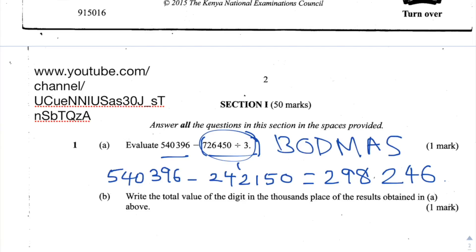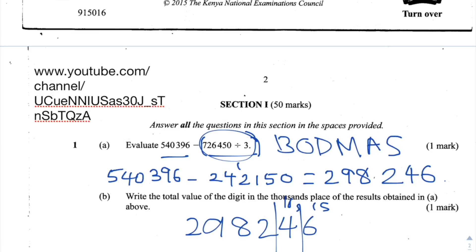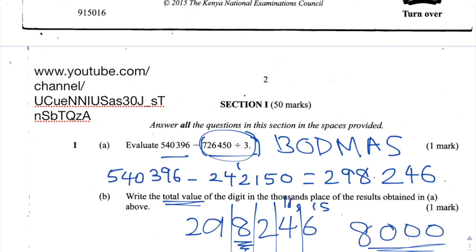Question 1b asks us to write the total value of the digit in the thousandths place of the result obtained in part a. We got the answer 298,246. This is a place value question: ones, tens, hundreds, thousands. The digit 8 is in the thousands place. The total value is 8 times 1,000, which gives us 8,000. So the answer to 1b is 8,000.